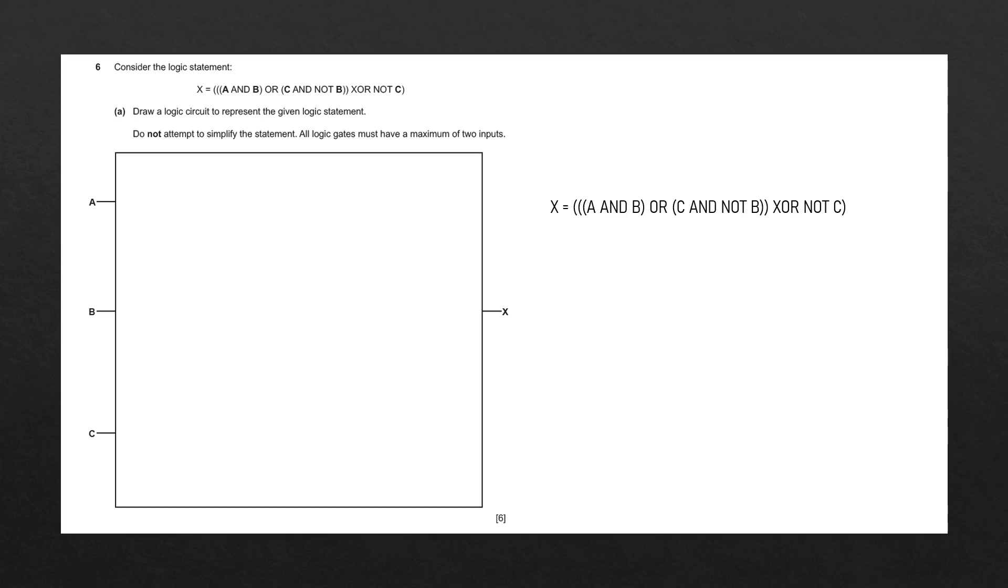Consider the logic statement: x equals a and b, or c and not b, x or not c. Draw a logic circuit to represent the given logic statement. Do not attempt to simplify the statement. All logic gates must have a maximum of two inputs.